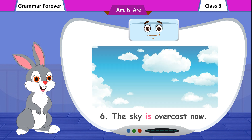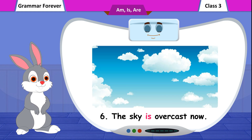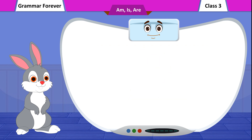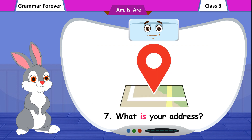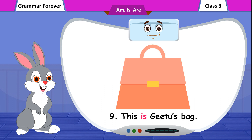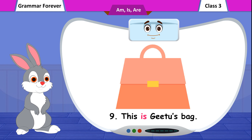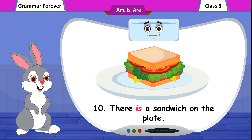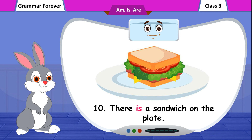6. The sky is overcast now. 7. What is your address? 8. Neeta Gupta is his wife. 9. This is Geetu's bag. 10. There is a sandwich on the plate.